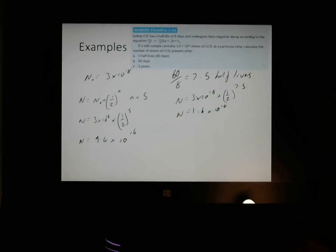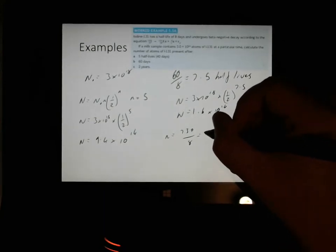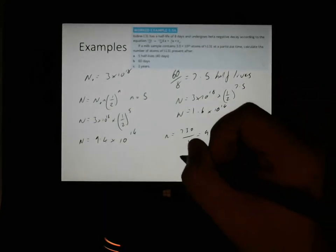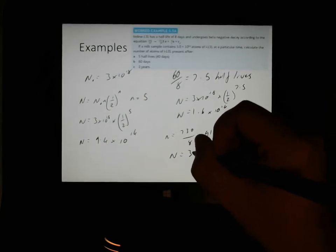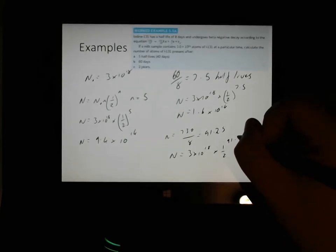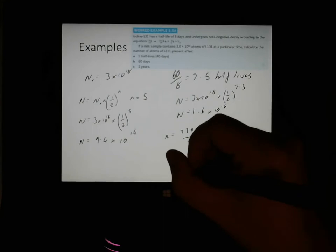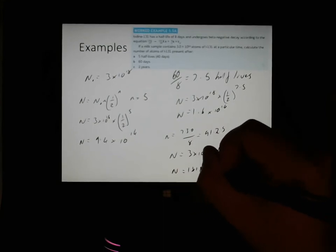The last one there, 2 years, well our half-life is in 8 days, so we're going to have to turn 2 years into days. So 365 times 2 gives us 730 divided by 8. So n would equal 730 divided by 8 equals 91.25. So again, we'll do the exact same thing. n equals 3 times 10 to the 18 times a half to the power of 91.25. 3 times 10 to the 18 times 0.5 to the power of 91.25 gives us a very small number, which is 1 times 10 to the negative 9.